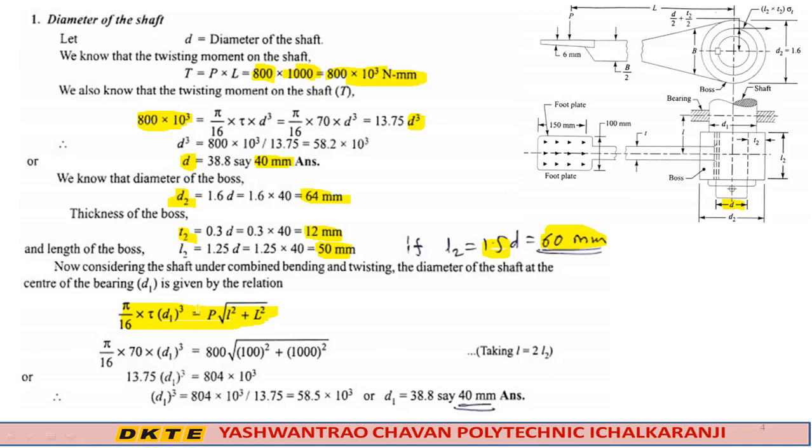Substituting the values into the formula, where l equals 2L₂, and simplifying the mathematical equation, we get d₁ equals 40 mm.